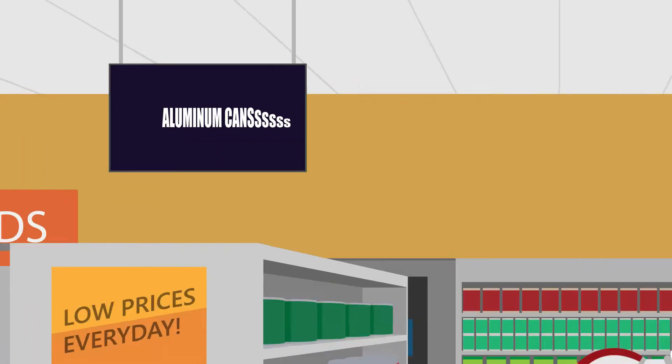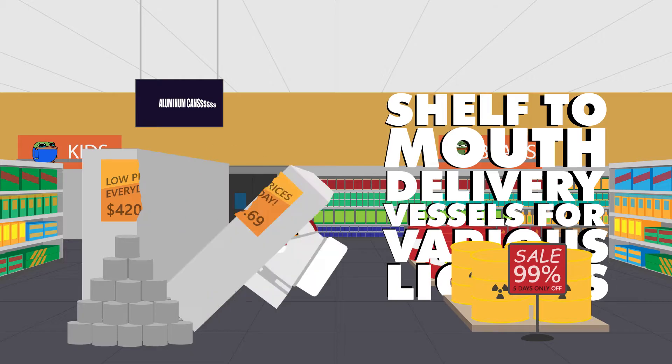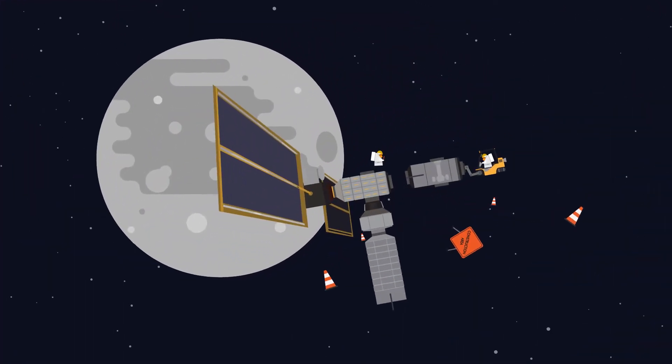Aluminum cans. You might know them as shelf-to-mouth delivery vessels for various liquids. But take a close look at the International Space Station or the Lunar Gateway.